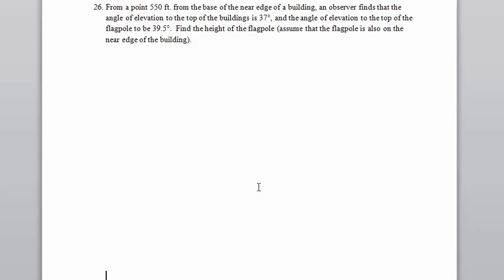The first thing we want to do is draw a picture because one is not given, so hopefully there is enough information here. So you have a building, there's my building, and you have an observer who is 550 feet from the near edge of the building, which is right here.